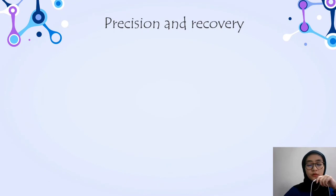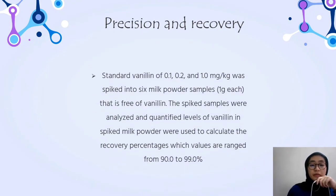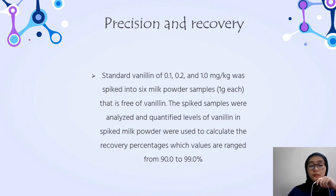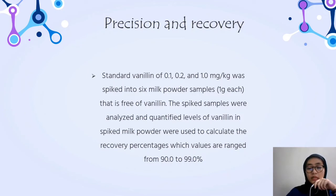For precision and recovery, standard vanillin at 0.1, 0.2, and 1 mg/kg were spiked into seed milk powder samples of 1 gram each that were free of vanillin. The spiked samples were analyzed and the quantified level of vanillin in the spiked milk powder was used to calculate the recovery percentage, with values ranging from 90 to 99%.